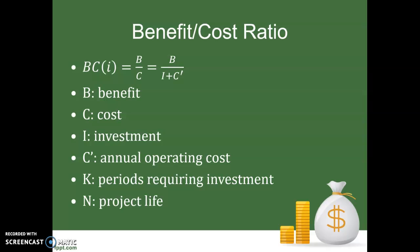Let's start putting this stuff into numbers. The basic idea of a benefit-cost ratio is simply taking benefits and dividing by the cost. If the benefit is greater than the cost, this ratio will be greater than one, which means it's a good thing. If the cost is bigger, then this ratio will be less than one, and that's a bad thing.